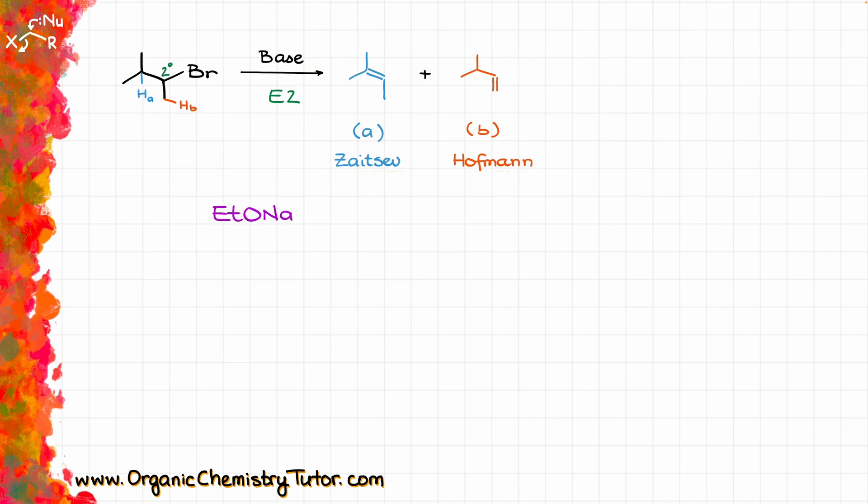So for instance, if I use sodium ethoxide, which is a smaller base, we are going to get about 70% of the Zaitsev product and roughly 30% of the Hoffman product. And if I were to use tert-butoxide, like let's say potassium tert-butoxide, which is a bulky base, well in that case we are going to see roughly 28% of the Zaitsev product and about 72% of the Hoffman product.